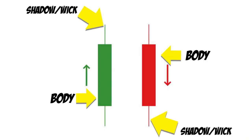This is a typical candlestick. We have the body and the shadow. The line at the top and the bottom of the candle is referred to as the shadow — it is also called a candle wick.